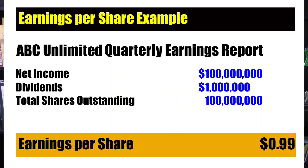Let's take a look at this example. ABC Unlimited had a quarterly net income of a hundred million dollars. They paid out one million dollars in dividends. One hundred million dollars minus one million dollars in dividends will leave the company with ninety-nine million dollars. Ninety-nine million dollars divided by one hundred million shares outstanding would equate to an earnings per share of ninety-nine cents.